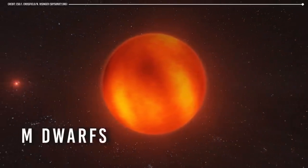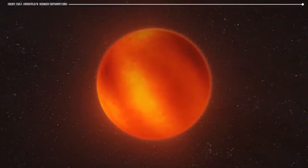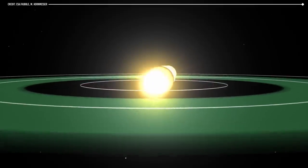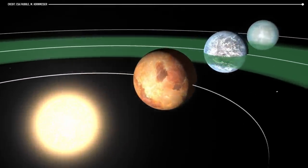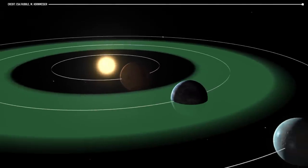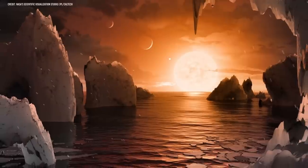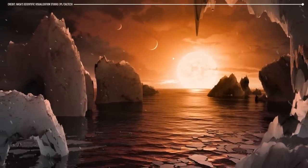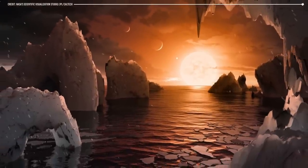One of the most interesting properties of red dwarfs is their habitable zones. The habitable zone of a star is the region around it where the temperature is just right for liquid water to exist on the surface of a planet. Because red dwarfs are smaller and cooler than other types of stars, their habitable zones are much closer to the star.